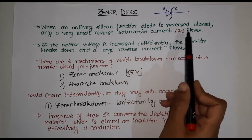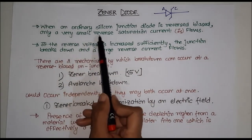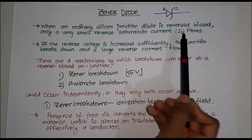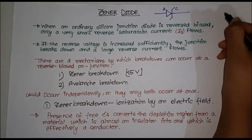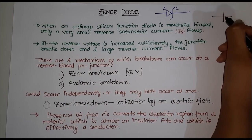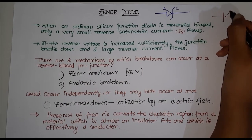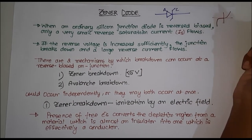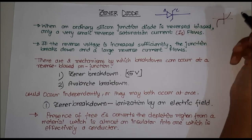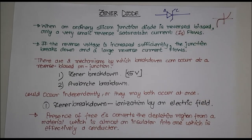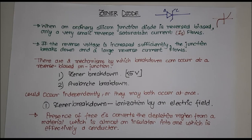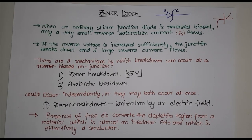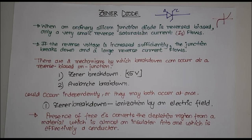As you can see, when an ordinary silicon junction diode is reverse biased, only a very small reverse saturation current flows. We saw in the graph the forward bias characteristics and then reverse bias — this was a small reverse saturation current that used to flow. But if the reverse voltage is increased sufficiently, the junction breaks down and a large reverse current flows.